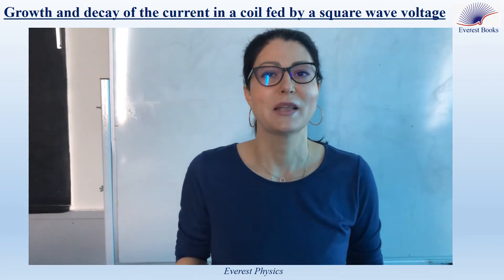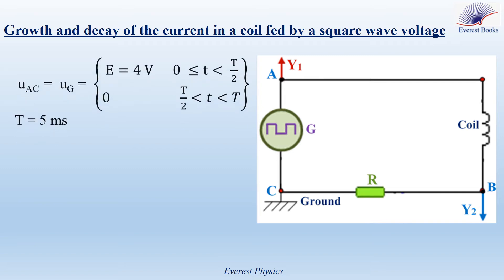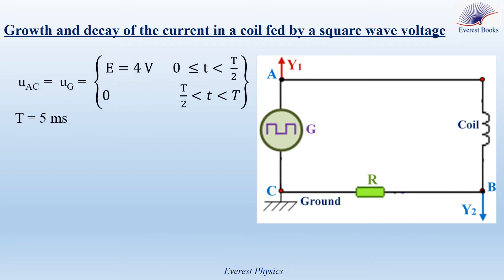How can we explain this phenomenon? Let's explain the growth and the decay of the current observed in the previous experiment. Consider this circuit. The square wave voltage delivered by G has a maximum value E equal to 4 volts and a period T equal to 5 milliseconds. Note that the oscilloscope does not display a current — it displays only a voltage. So we insert a resistor in series with the coil, and then the coil and the resistor are connected across G. In the next slide, we will explain how the voltage across R represents the current in the coil.